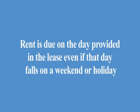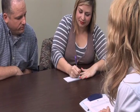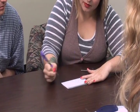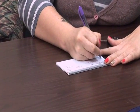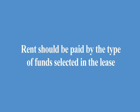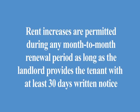Paragraph five, Rent. This paragraph identifies the monthly rent, the date rent is due, the place of payment, and the method of payment. Rent is due on the day provided in the lease, even if that day falls on a weekend or holiday. A delay in the mail will not excuse the tenant's obligation to pay rent on time — strict compliance with the due date is required. This paragraph also identifies to whom payment should be made and the place of payment. Rent should be paid by the type of funds selected in the lease, which include cashier's check, electronic payment, money order, personal check, or other forms acceptable to the landlord. The tenant should not pay the rent in cash unless otherwise agreed. Finally, this paragraph explains that there will be no rent increases through the primary term of the lease, but rent increases are permitted during any month-to-month renewal period as long as the landlord provides the tenant with at least 30 days written notice.